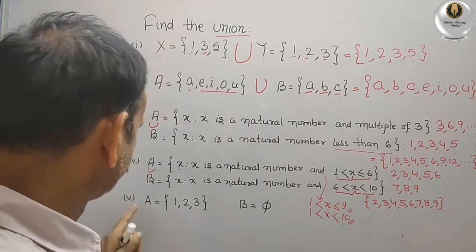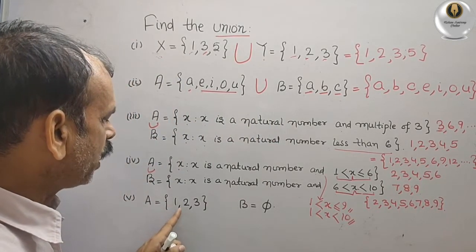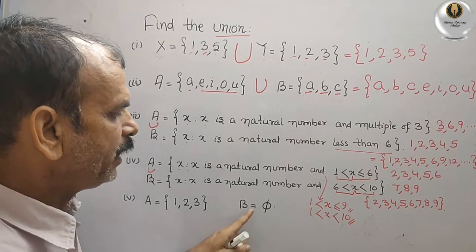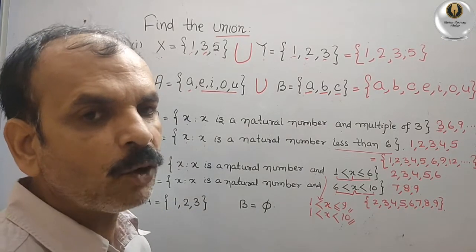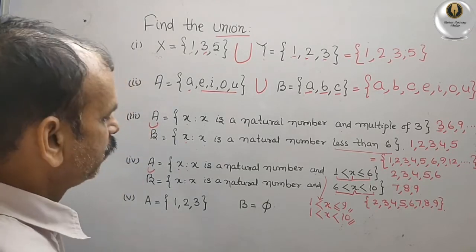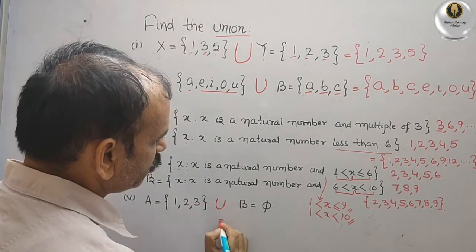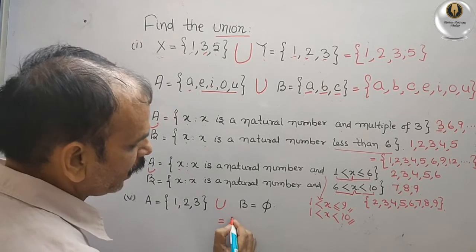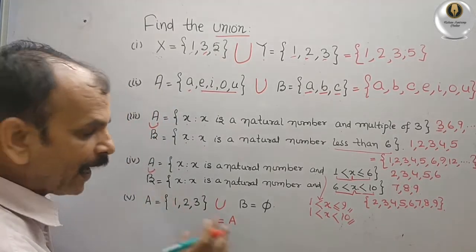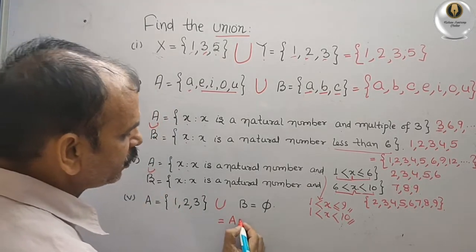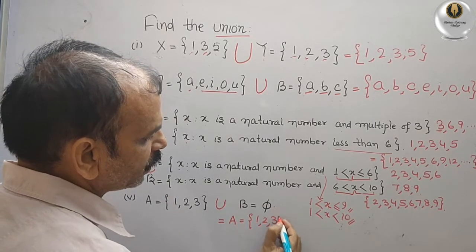The fifth example: A = {1, 2, 3} and B = ∅ (empty set, without any elements). So A union B equals nothing but your set A itself, which is {1, 2, 3}.